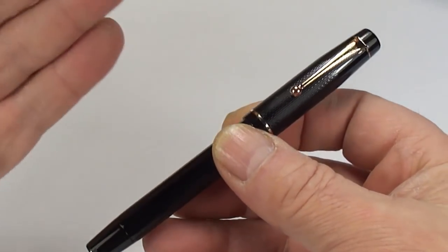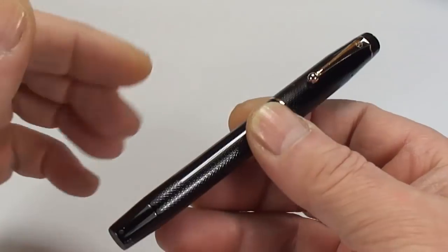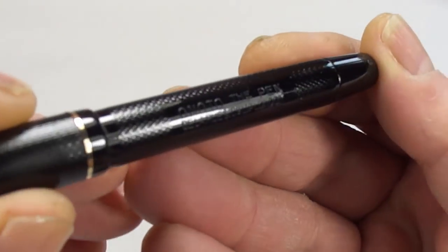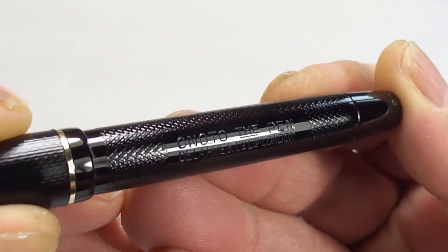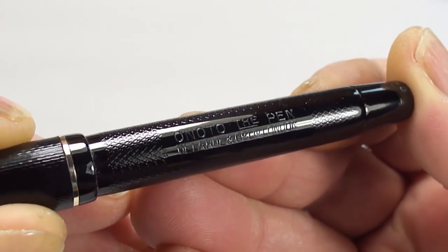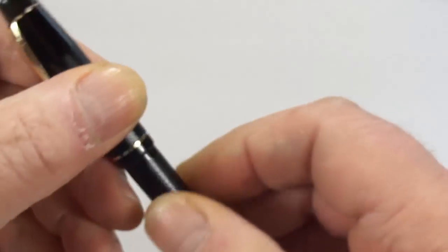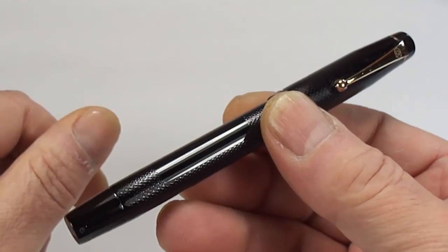We've totally disassembled the pen. Cleaned everything, ultrasonically cleaned. Giving the pen a lovely polish. Let's show you the barrel imprint there. Nice and clear. Anotto the pen, De La Rue and Company Limited London. So it's a 5601-28.